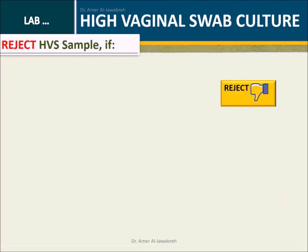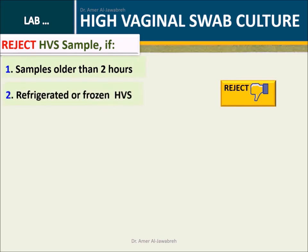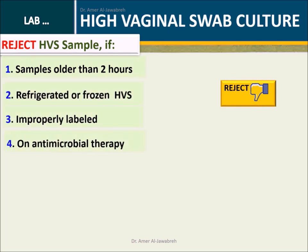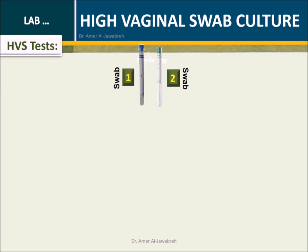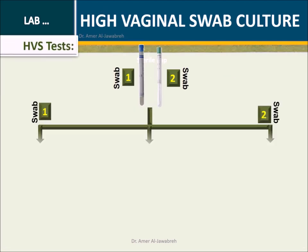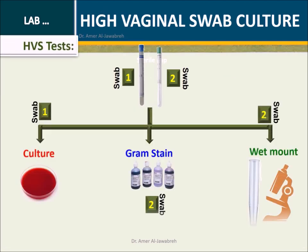Reject the HVS sample if at least one of the listed rejection conditions is met. HVS tests include: culture, gram stain, and wet mount.